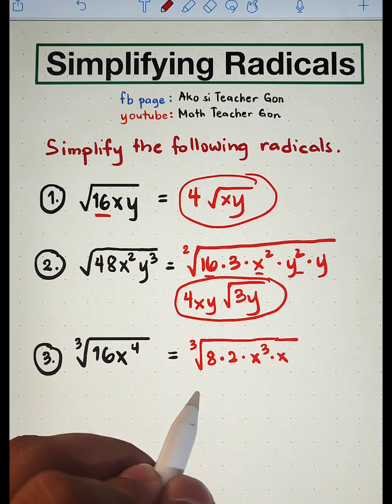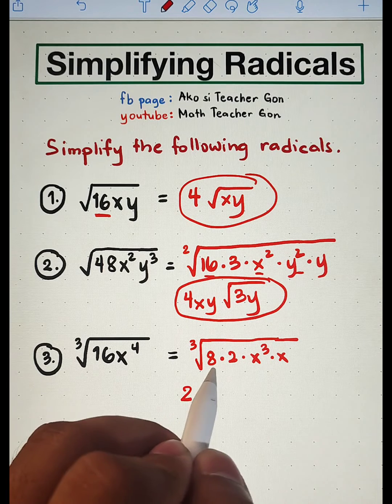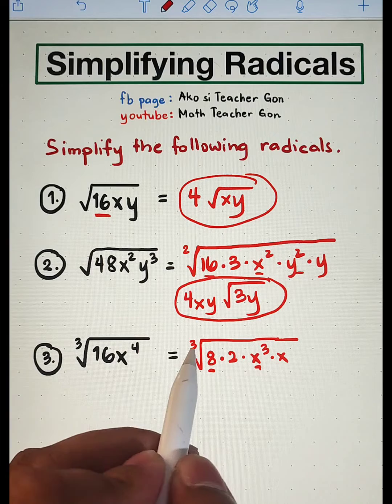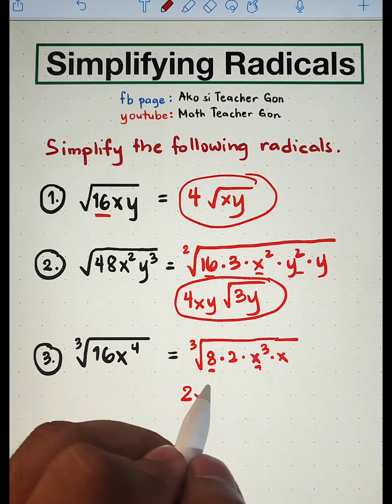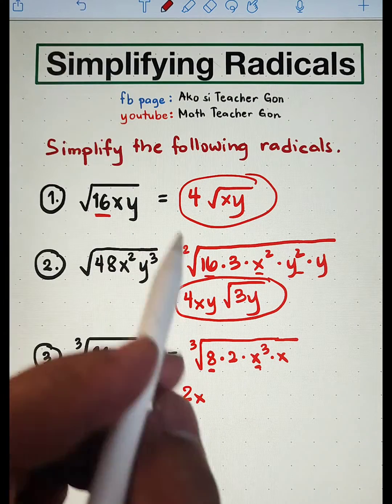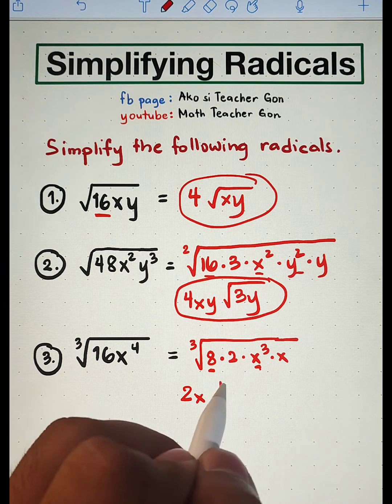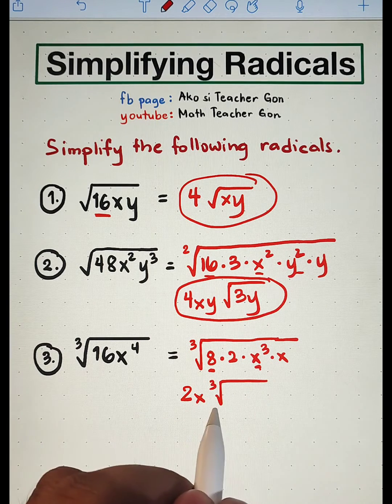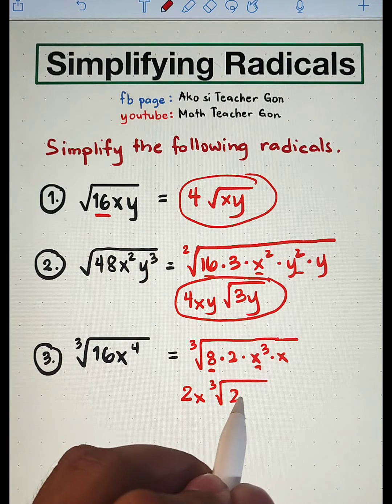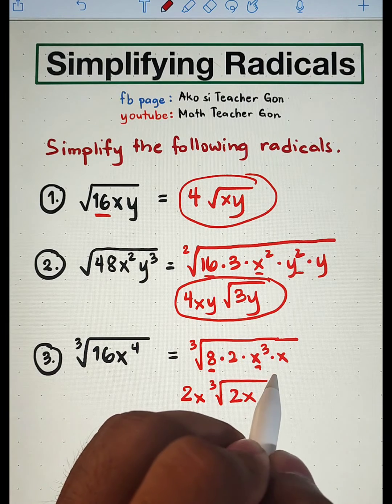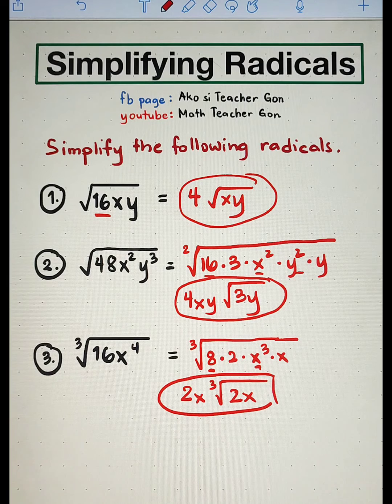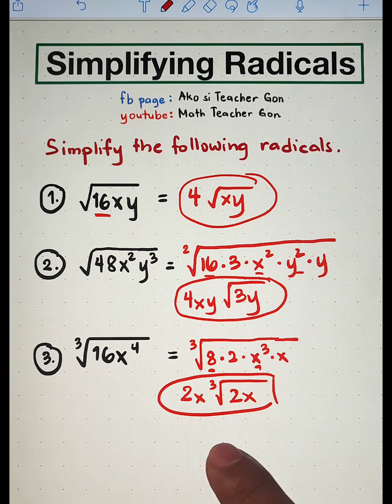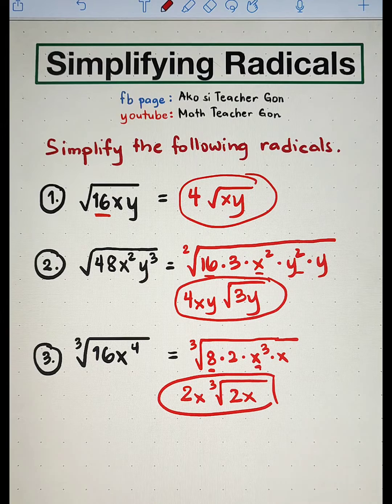Extract the cube root of 8, which is 2. The cube root of x cubed, 3 divided by 3, is x raised to 1, or x. And as you can see, the radicand inside the radical is 2 and x. Meaning, the simplified form of number 3 is simply 2x times the cube root of 2x.